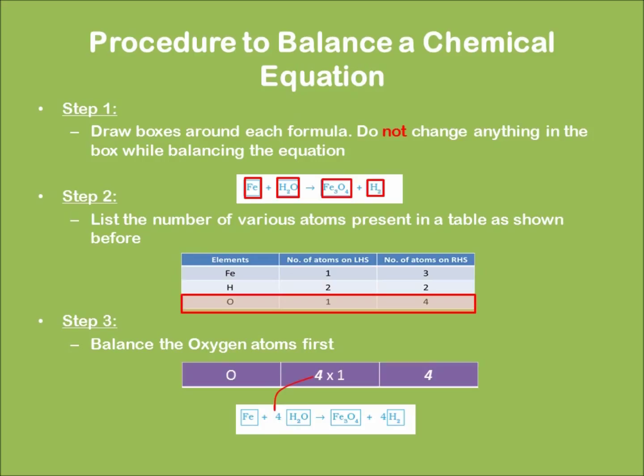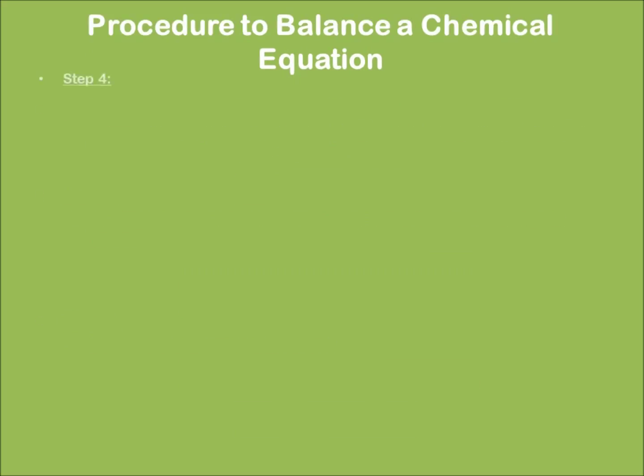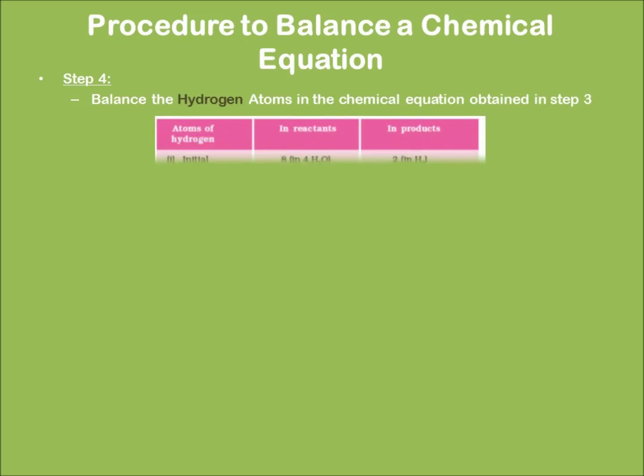Now, coming to step number four. In this step, I have to balance the atoms of hydrogen in the same procedure. Consider the given table. I have eight atoms of hydrogen on my right and two on my left, so I multiply it by four.